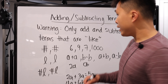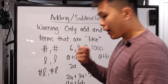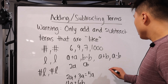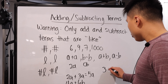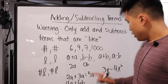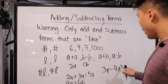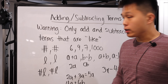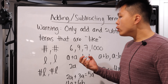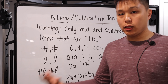The other caveat is that it may be the same variable, but if they happen to have a different exponent, you really can't combine them either. For example, 3X minus 4X squared — even though the variables are both X, you can't combine them because one is squared and the other is not. That's what it means when it says you can only add and subtract like terms or similar terms.